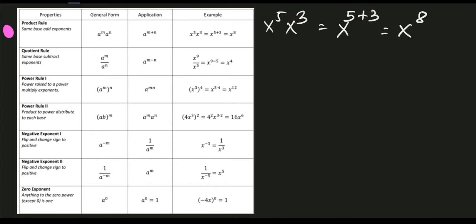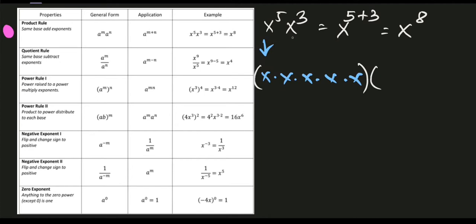To illustrate: x raised to 5 equals x multiplied by itself 5 times, and x raised to 3 equals x multiplied by itself 3 times. Since we have the same base x, we count all the terms — 1 through 8 — confirming this expression equals x raised to 8.